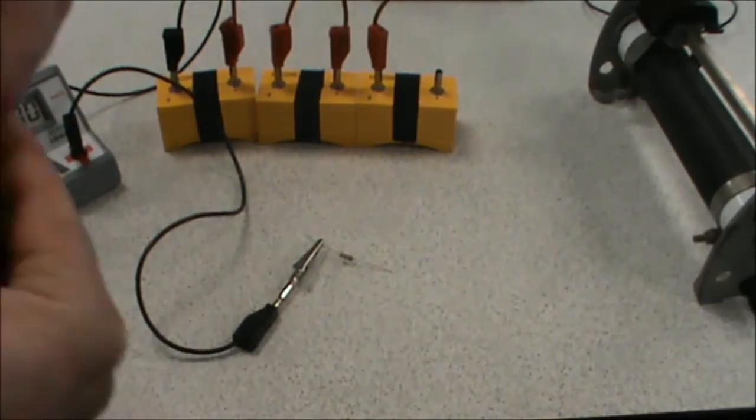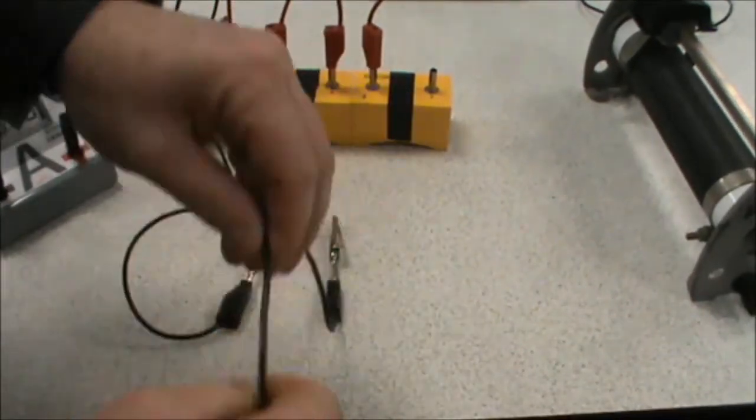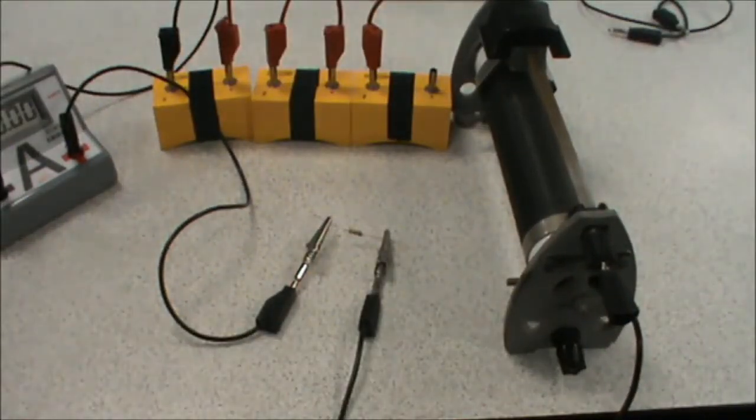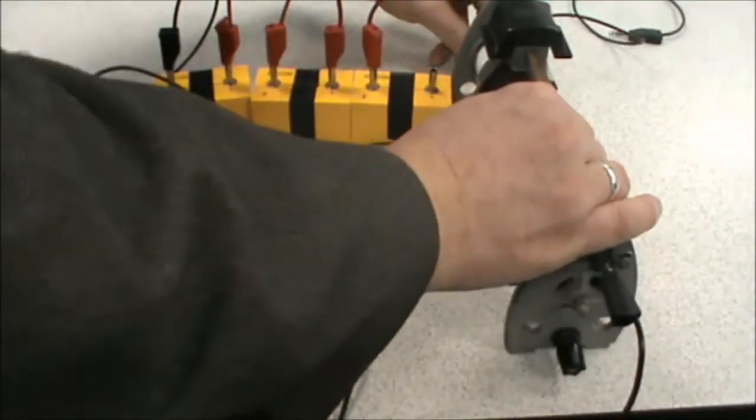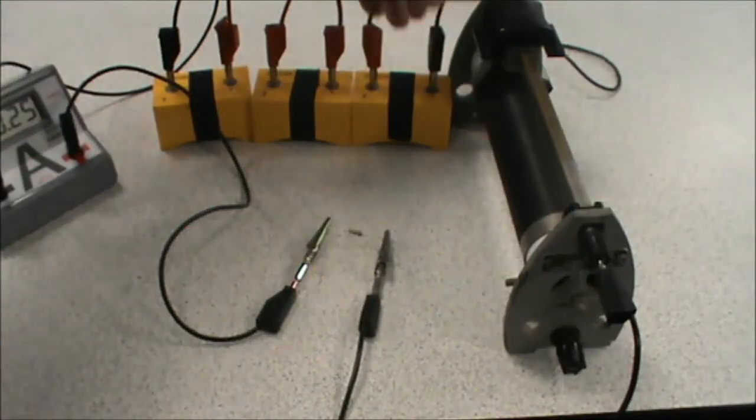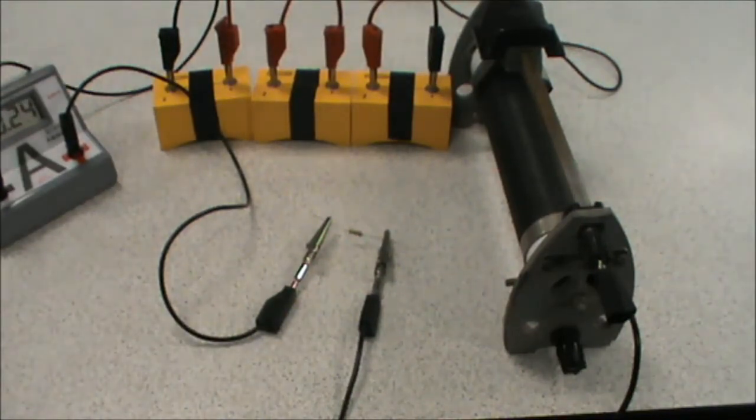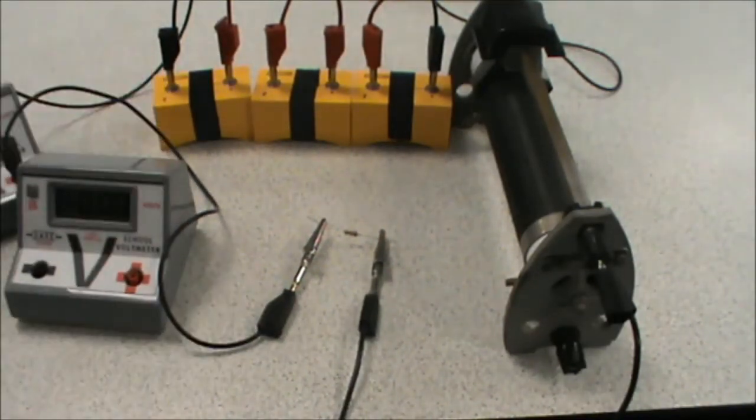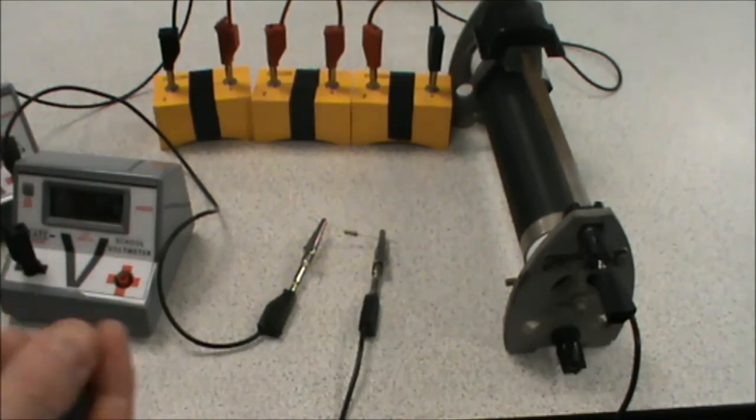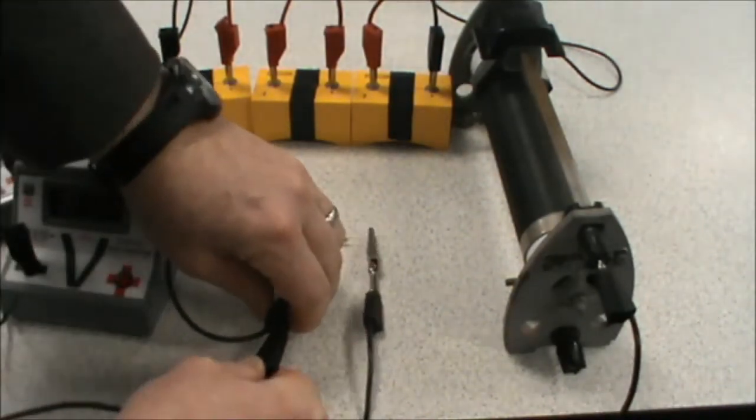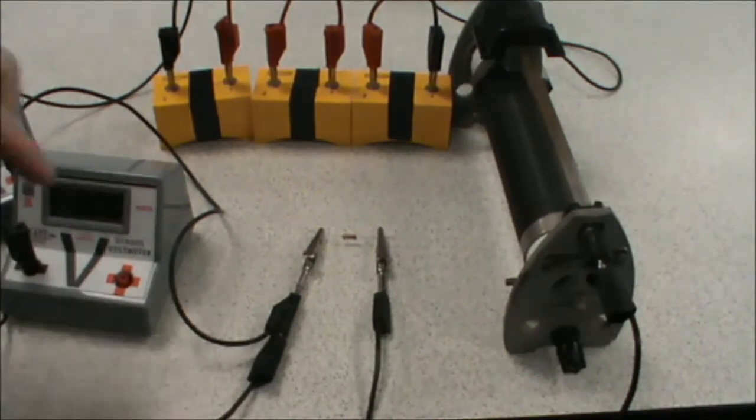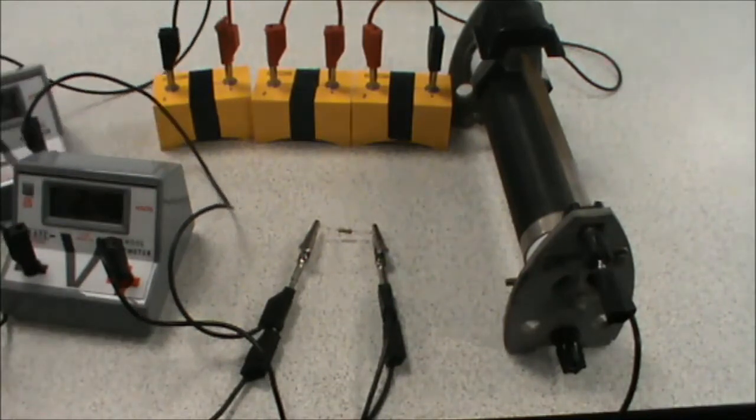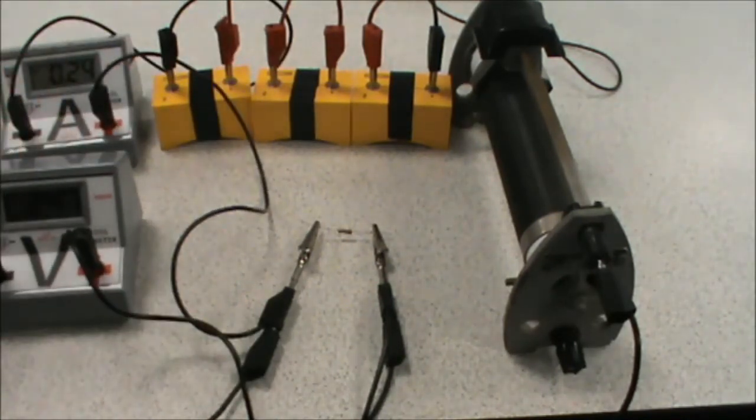And from our ammeter we use a connector with a crocodile clip on to connect up to our fixed resistor. From the fixed resistor we connect up to our variable resistor, and from our variable resistor back to our power source. We now have the main body of our circuit complete. All that remains is to put our voltmeter in parallel across our fixed resistor, and there we have our completed circuit.